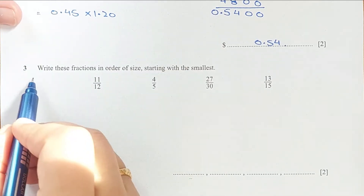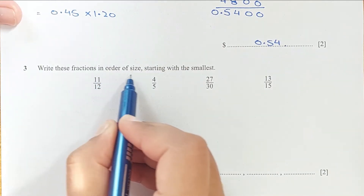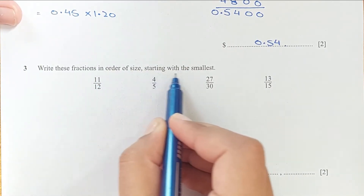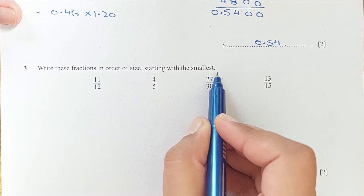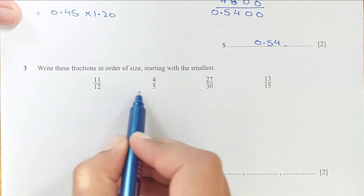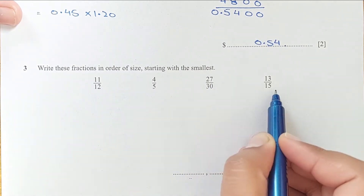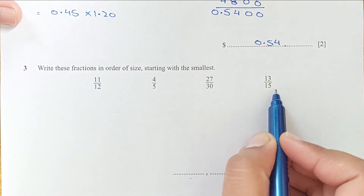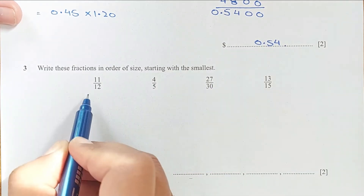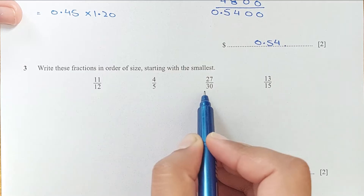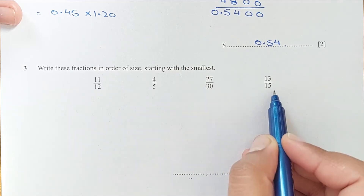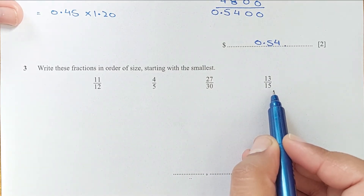Now for number 3. Write these fractions in order of size starting with the smallest. As you can see, the denominators of all the fractions are different: 12, 5, 30, 15. The common multiple is 60.